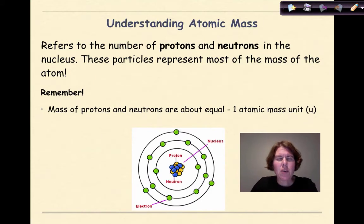So understanding atomic mass, what is atomic mass? Atomic mass refers to the number of protons and neutrons inside the nucleus of an atom. Those are the two subatomic particles found inside the nucleus. These particles represent most of the mass of the atom. Some mass is attributed to electrons, which is a very tiny amount. Most of the mass is found in the nucleus.